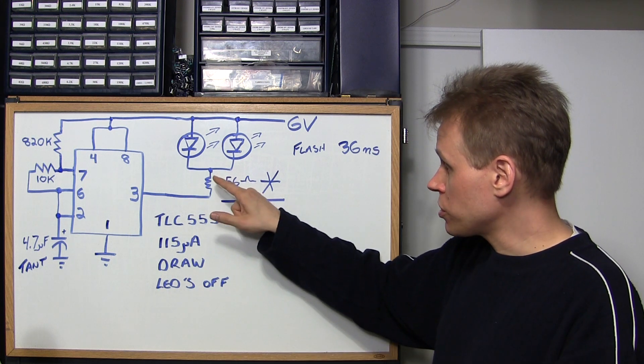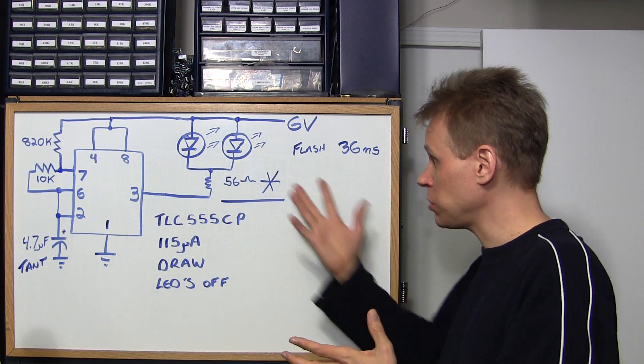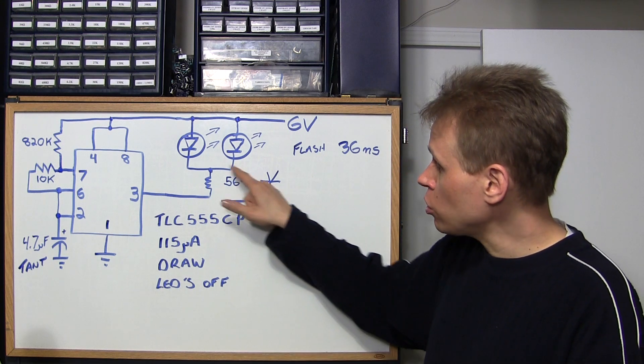You can see I have a 56 ohm resistor here as a current limiting resistor with two LEDs and the reason that I've set this up like this is again it's just a minimalist kind of design. The 56 ohm resistor I chose because I really want the flash to remain bright throughout the entire life of these CR2032 batteries.